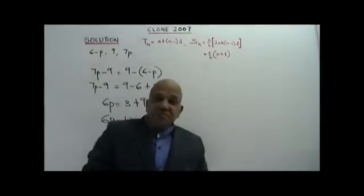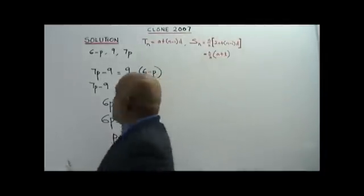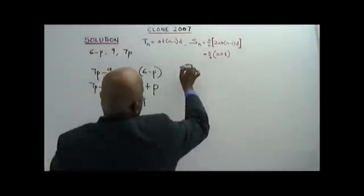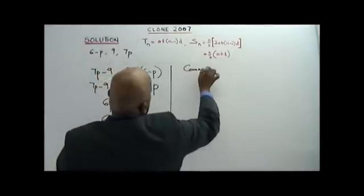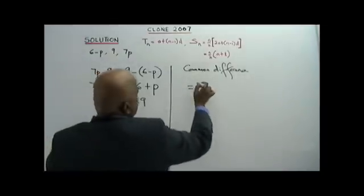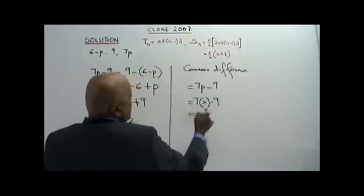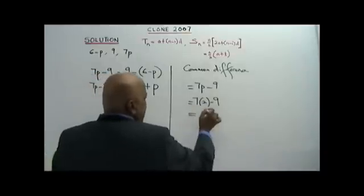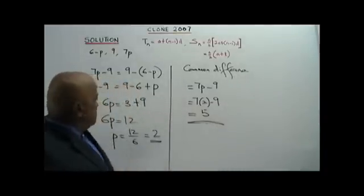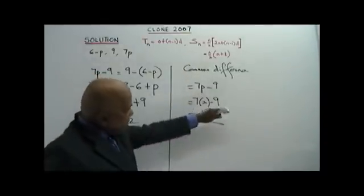P is 2, but we are supposed to find the common difference, not just P. The common difference equals 7P minus 9 — that is 7 times 2 minus 9. 7 times 2 is 14, and 14 minus 9 is 5. This is your answer: the common difference is 5. Go step by step — don't stop at finding P, finish it until you find the common difference.